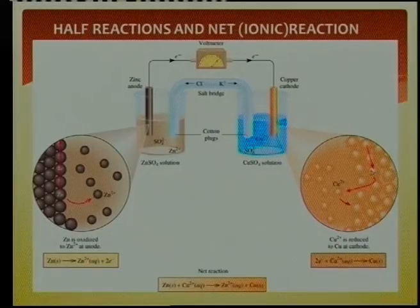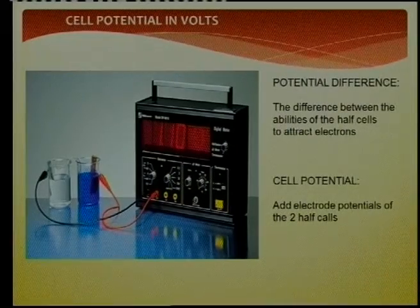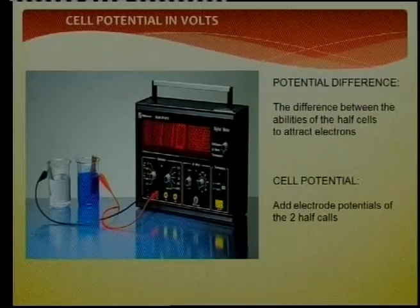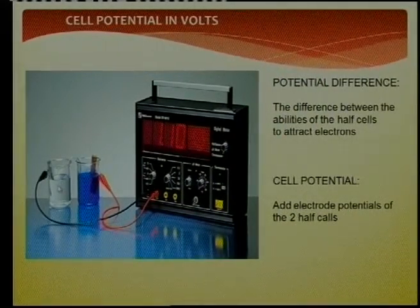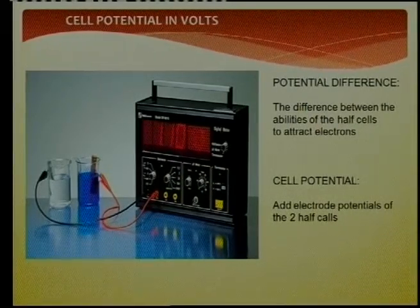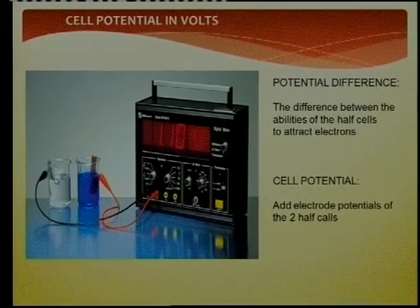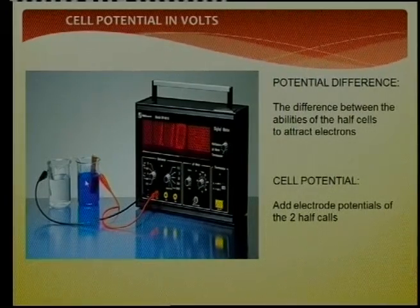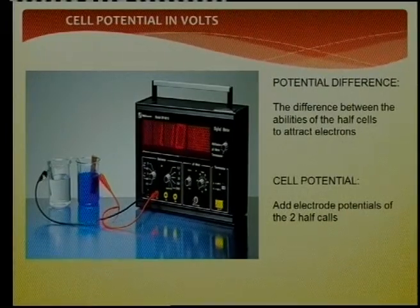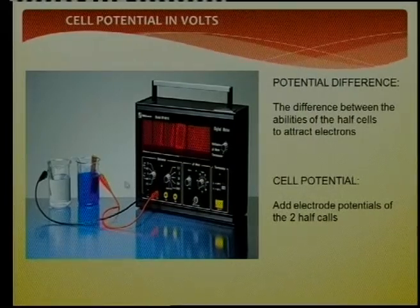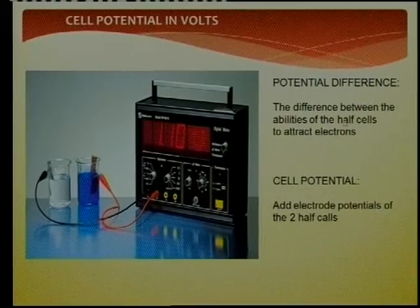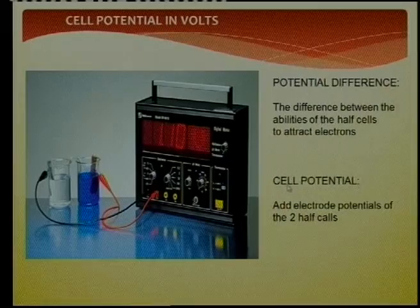Electrons move because zinc releases electrons and copper ions want to grab them. Zinc is the loser — it loses electrons. Copper ions are the winner — they gain electrons. That is how they react with one another by nature. When those electrons flow and the voltmeter measures it, we see 1.10 V. That difference between the two cells is what the voltmeter can measure, and we call that the potential difference, or the cell potential.